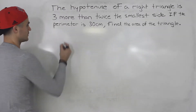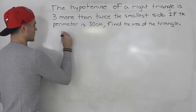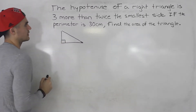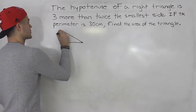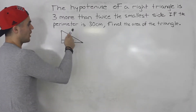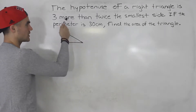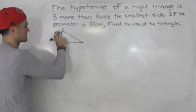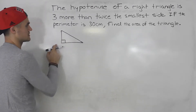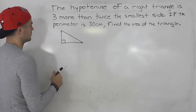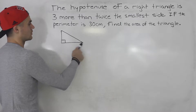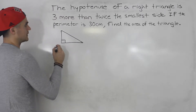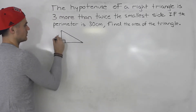So let's draw a right angle triangle and try to label this with either some numbers or some variables. We're told the hypotenuse of this triangle is three more than twice the smallest side. The smallest side can either be the base or the height. Let's assume the height is the smallest side. So we'll let the smallest side, the height, equal x.